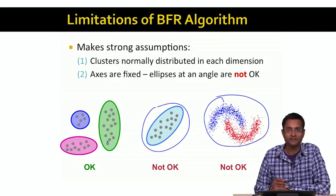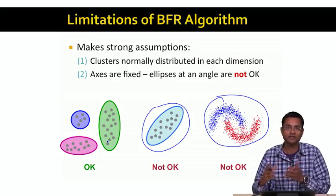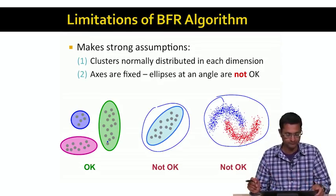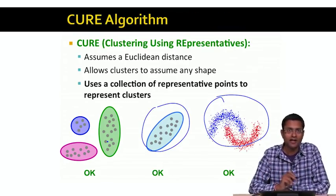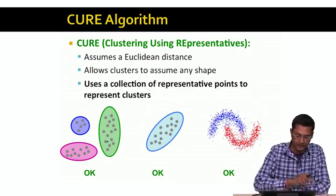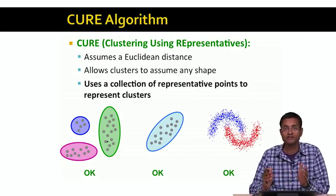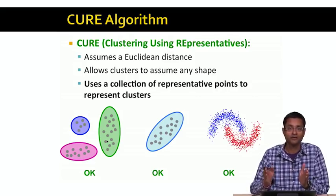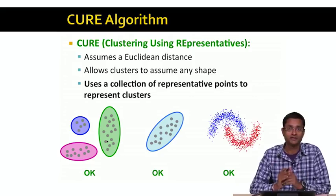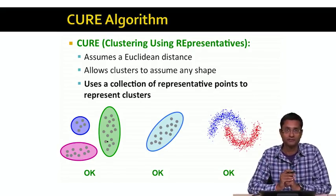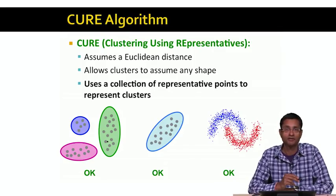So the BFR algorithm, even though it's super efficient, makes the strong assumption that the clusters are going to look like cigars, and not tilted ellipses or crescents. We'd like to avoid this assumption and try to find clusters regardless of what they actually look like, because we don't control what the clusters look like in the data. The CURE algorithm tries to fix this problem with BFR. The CURE algorithm assumes a Euclidean distance — meaning between any two points, we can always find a midpoint by taking the average of those two points. However, unlike BFR, CURE allows clusters to assume any shape whatsoever, with no restriction on the shape of the clusters.